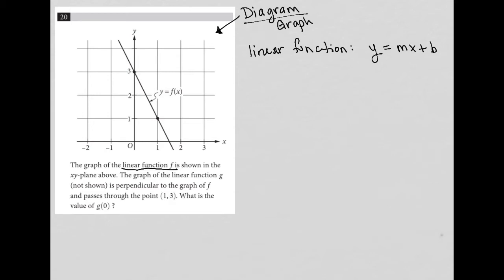So the graph of the linear function f is shown in the xy plane above. The graph of the linear function g, not shown, is perpendicular to the graph of f. Okay, so what does that mean? Perpendicular to the graph of f and passes through 0, 1, 3. What is the value of g of 0? Okay, so we're going to use this f of x function to find this unknown g of x function.